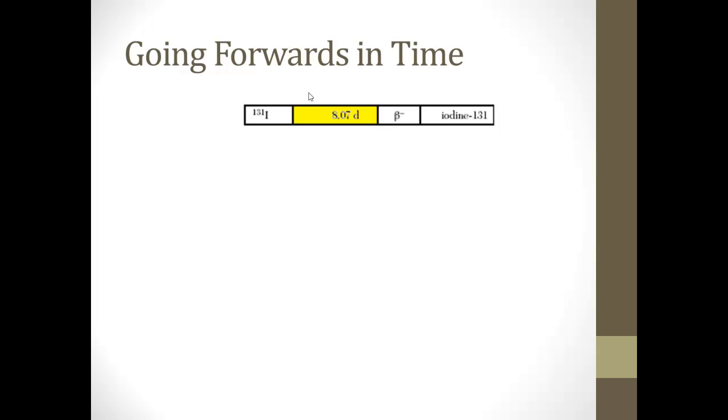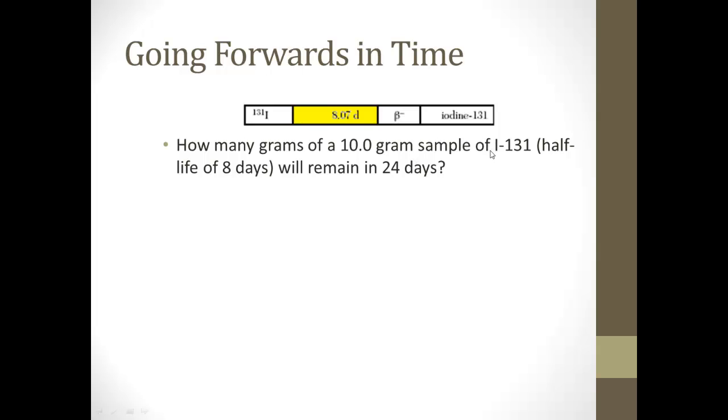So going forward in time, how many grams of a 10-gram sample of iodine-131, which has a half-life of 8 days, will remain in 24 days? So the first thing we have to do is figure out how many half-lives we're dealing with. So the number of half-lives is the total time, which is 24 days, divided by the half-life time, 8 days. So it's going to be 24 divided by 8 equals 3.